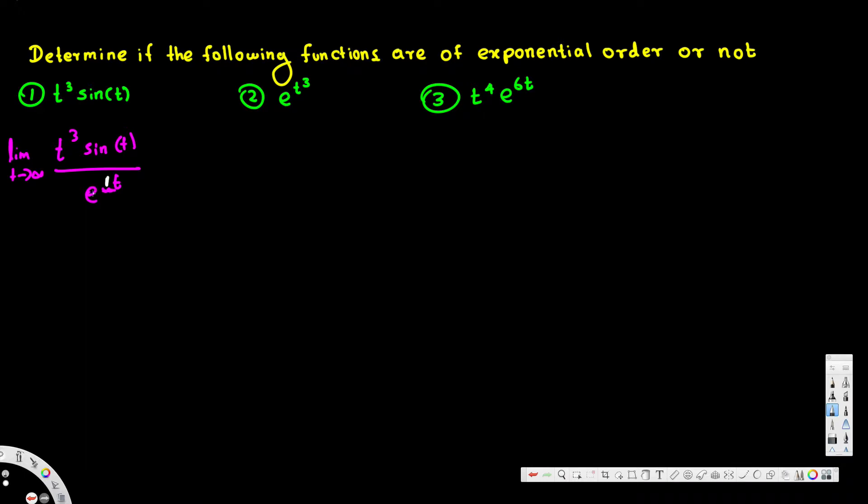when t approaches infinity, this is going to be much larger because exponential is much larger than t cubed. Therefore, if we divide by that huge number, this is going to equal zero. So the answer for this one is yes.